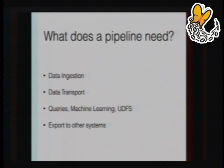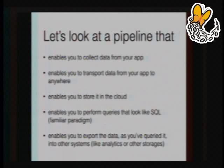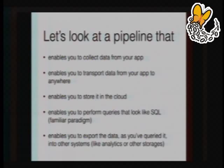So what does a data analytics pipeline actually need to have? It needs to be able to ingest data, transport data, run queries, do machine learning, define and run user-defined functions, and export to other systems. We can look at a pipeline that enables you to collect data from your application, transport it, store it in the cloud, and do SQL-like queries on it. SQL is a familiar paradigm — if you're bringing over people already familiar with SQL, you can put them to work right on big data without having to learn something intermediary like how to do queries on MongoDB. Then you can export the data into other systems like analytics and storage.